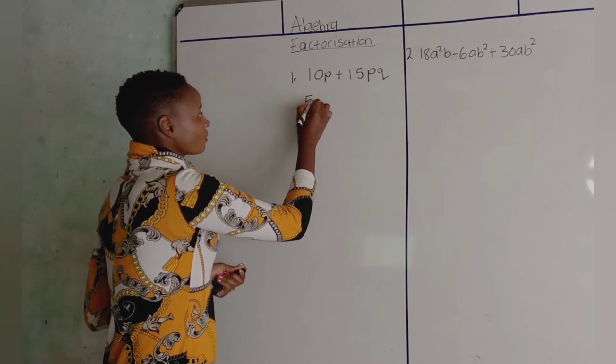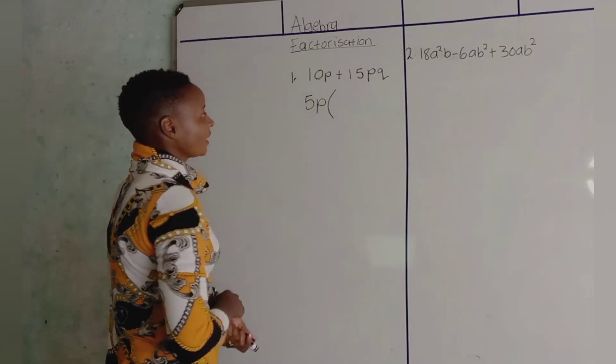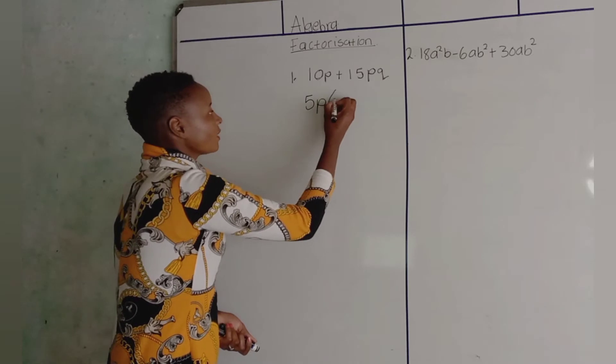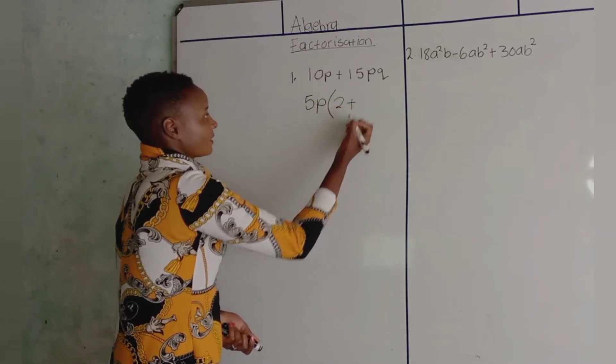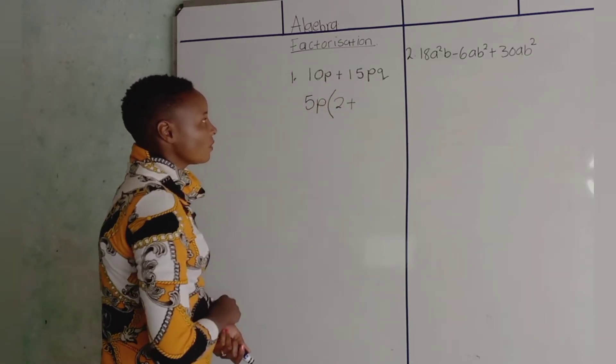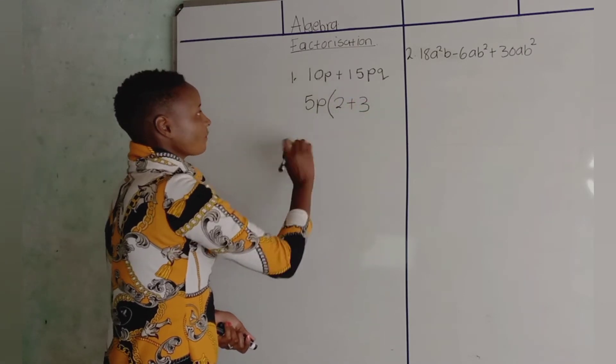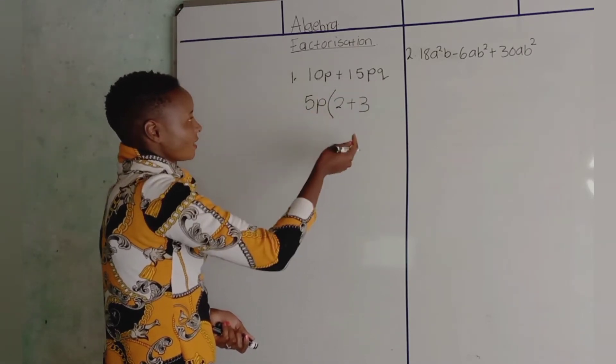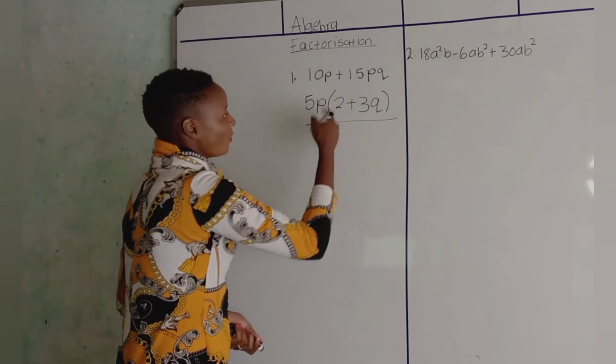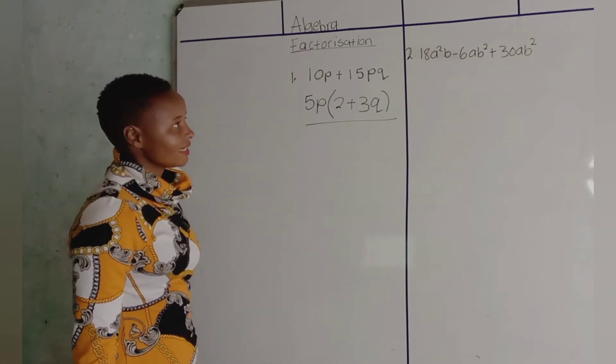Looking at the common factors: 5p is common. So, our answer: 5P open bracket, 2 plus 3Q. So you see, factorize.